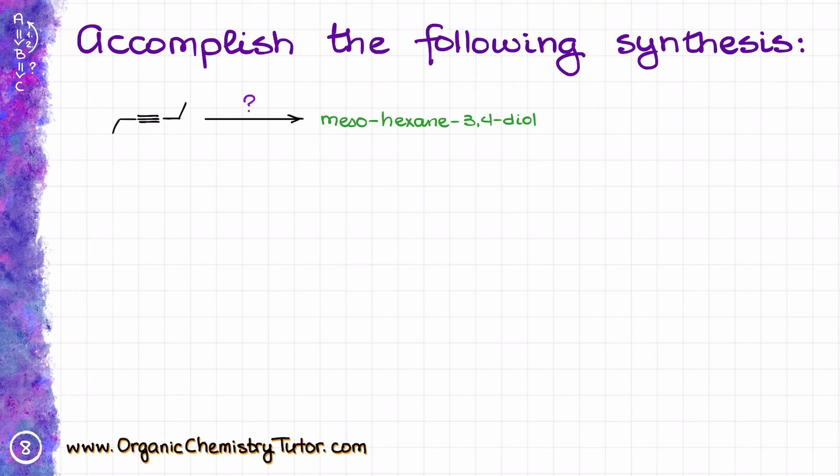The first thing that jumps at me right away is that we don't have a structure of our compound, we only have the name, and the name includes a specific stereochemistry. We know that we need to start with the meso compound here. So let's first of all draw our molecule and go from there.